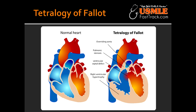What is the mnemonic to help you remember the four things that happen in Tetralogy of Fallot? The mnemonic is PROVE: P is for pulmonary infundibular stenosis, R is for right ventricular hypertrophy, O is for the overriding aorta, and V is for ventricular septal defect.